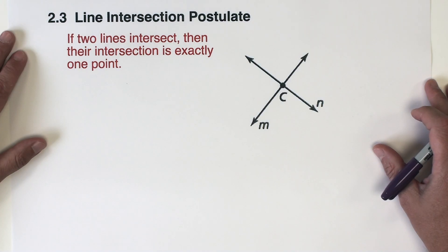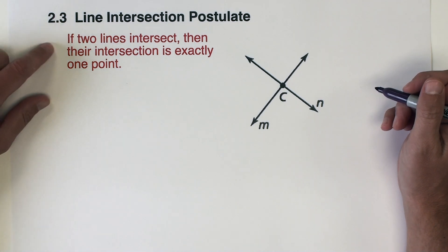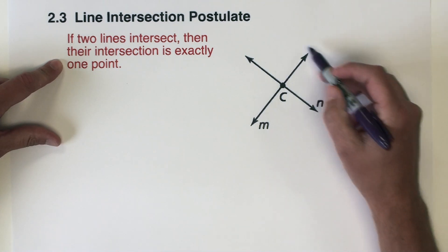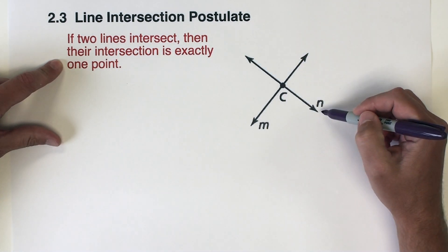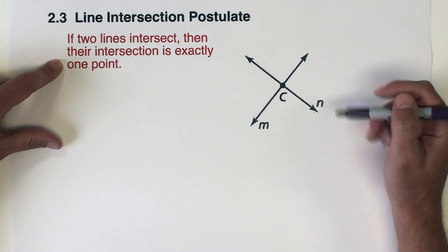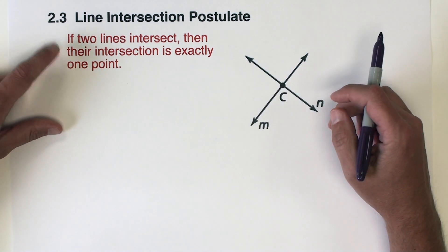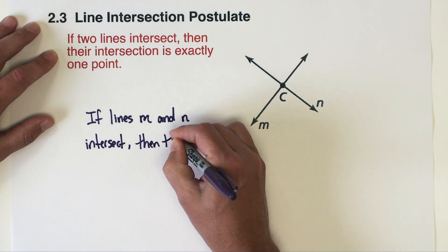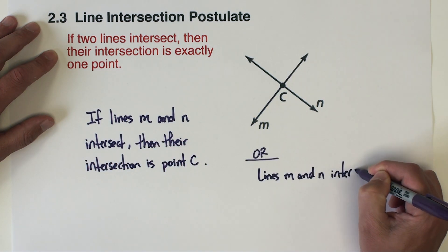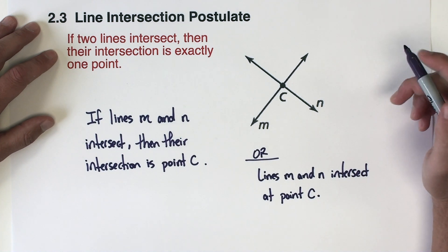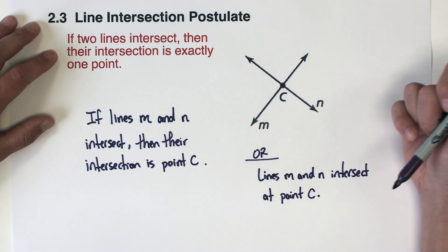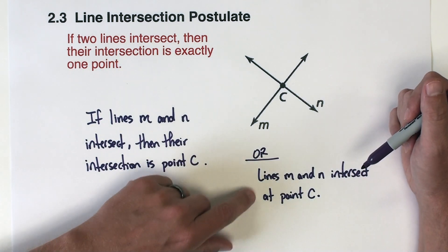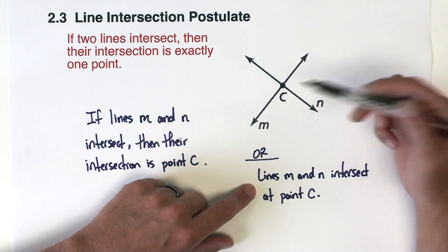Our next postulate is called the line intersection postulate, and it states if two lines intersect then their intersection is exactly one point. Here I have a diagram illustrating two intersecting lines — the intersection is a point. A specific statement illustrating this postulate might read: if lines M and N intersect, then their intersection is point C. Or simply: lines M and N intersect at point C.